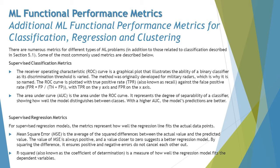Now talking about the supervised regression matrix — for supervised regression models, the matrix represents how well the regression line fits the actual data points. Mean Squared Error (MSE) is the average of squared differences between the actual value and the predicted value. MSE is always positive, and a value closer to zero indicates a better regression model. By squaring the difference, it ensures positive and negative errors do not cancel each other out.